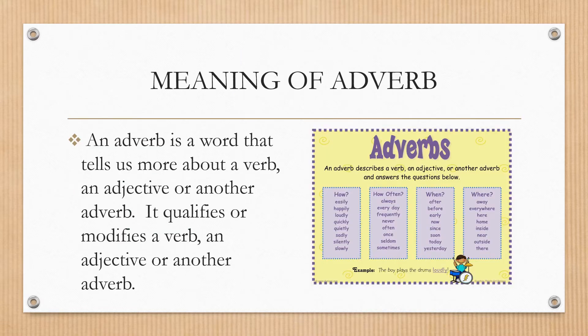Now, what is the meaning of adverb? Remember that last week we said that an adverb is a word that tells us more about a verb, an adjective, or another adverb. We said that it qualifies or modifies a verb, an adjective, or another adverb. An adverb answers the question how, how often, when, where, and to what degree.